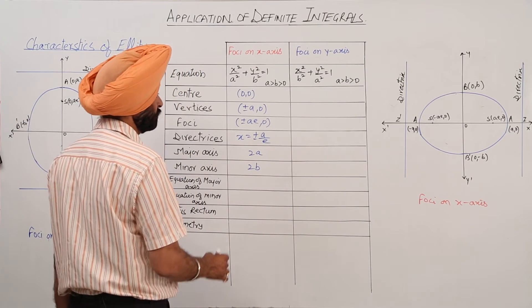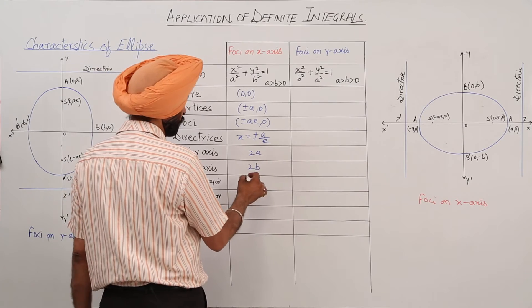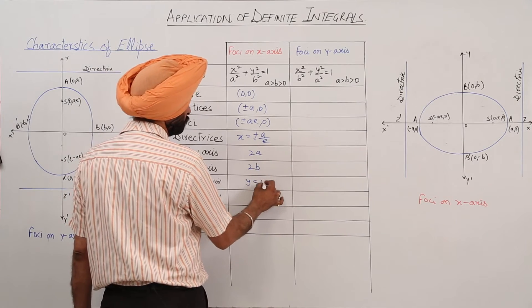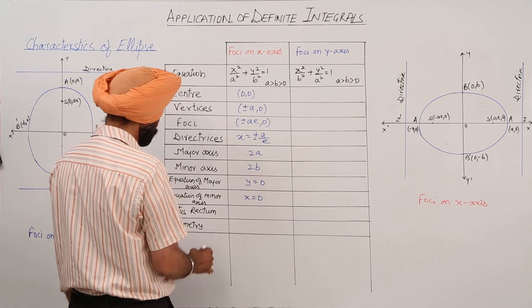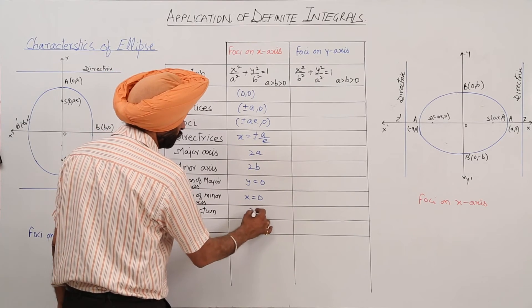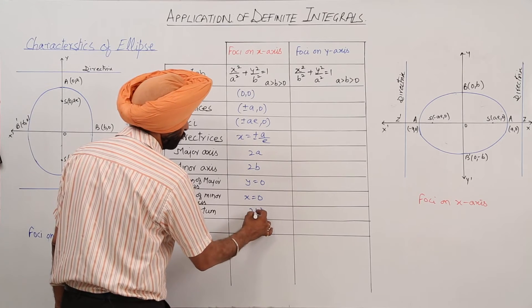Equation of major axis will be y is equal to 0. Equation of minor axis will be x is equal to 0. Latus rectum: here it will be 2b square upon a.